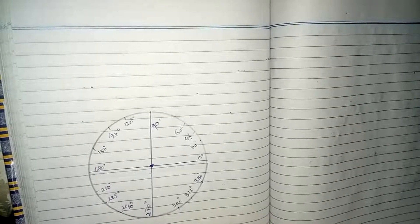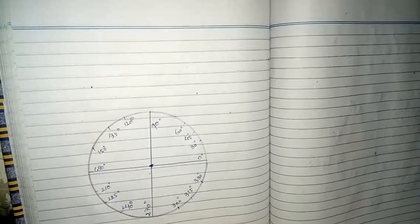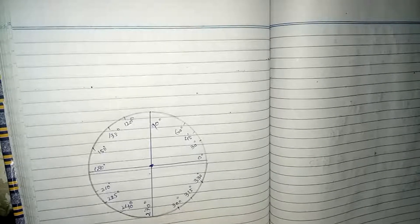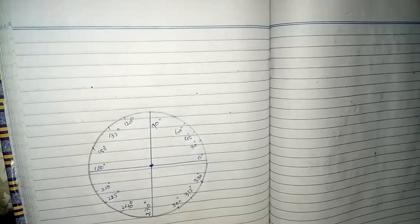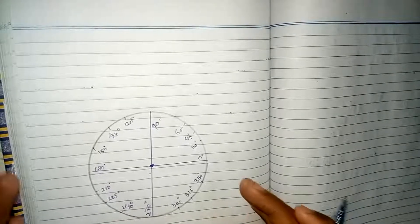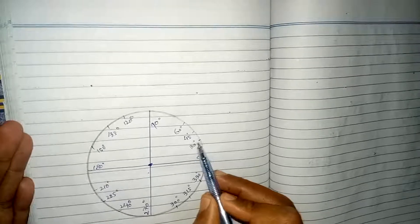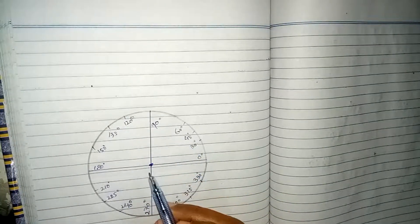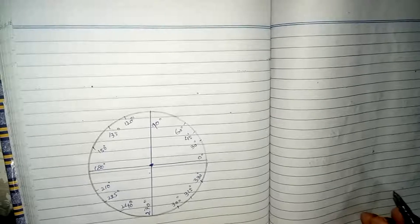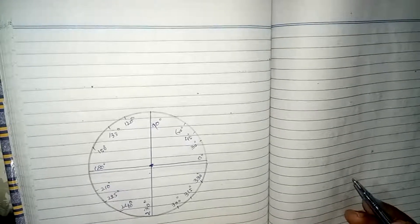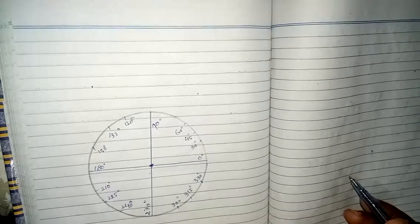Hello friends. In this video we will discuss why sine and cosine are called circular functions, and we will learn how we can compute the values of the trigonometric ratios at certain angles without the help of a calculator. For this exercise we have to understand the unit circle. I have drawn a unit circle and divided it into particular angles and portions. So first, let us focus on why sine and cosine are called circular functions.